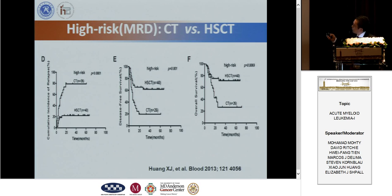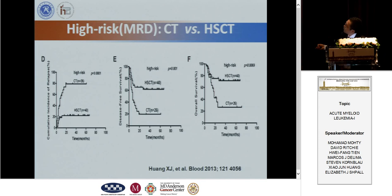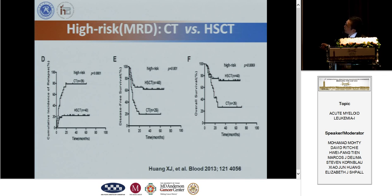For high-risk patients who received transplantation, disease-free survival was nearly 70%. But for high-risk patients who received chemotherapy only, disease-free survival was only 20% — a significant difference. This data clearly indicates that transplantation can benefit high-risk patients.